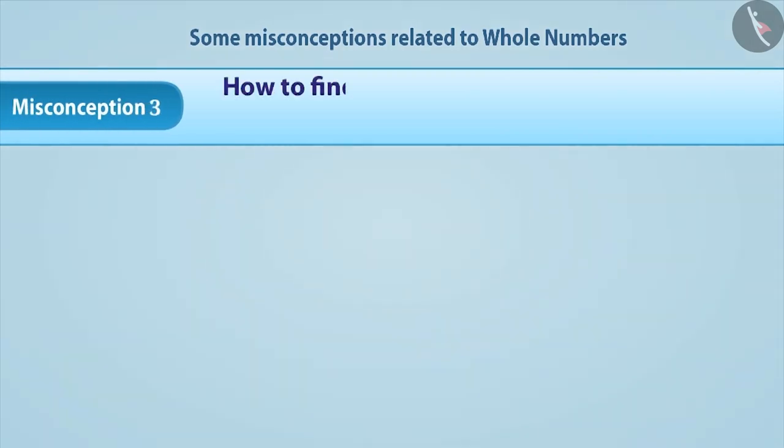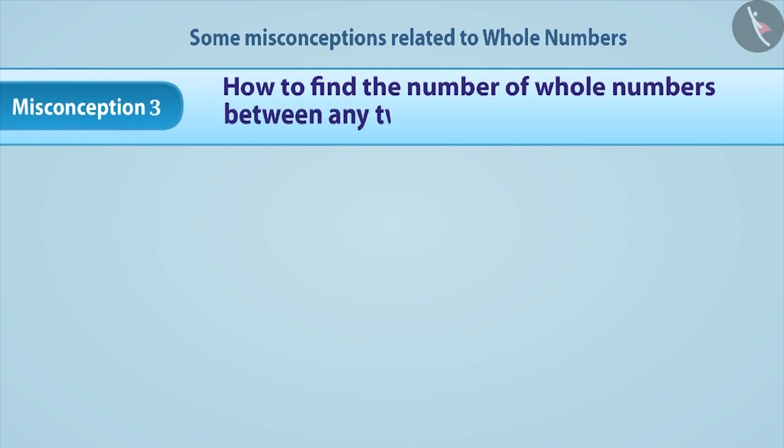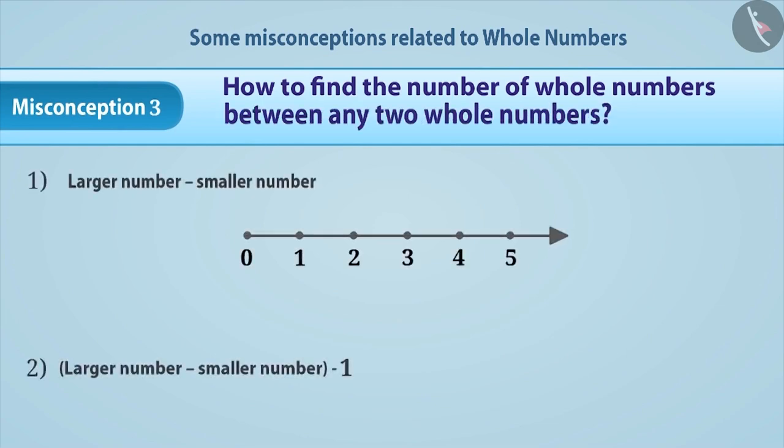Misconception 3: How to find the number of whole numbers between any two whole numbers? Often, there is a misunderstanding that by subtracting the smaller number from the larger number, the number of whole numbers between them can be found.